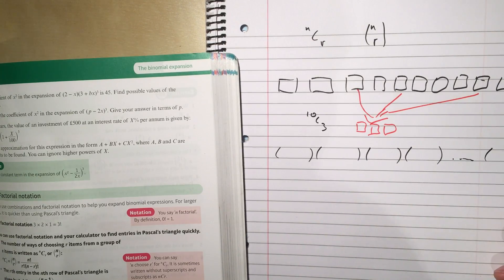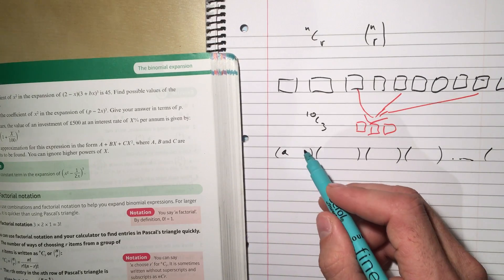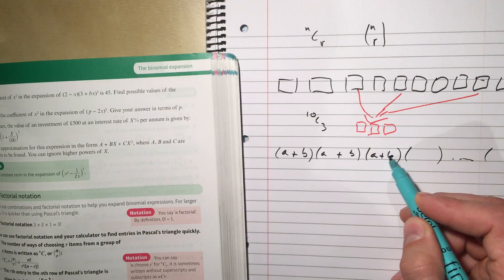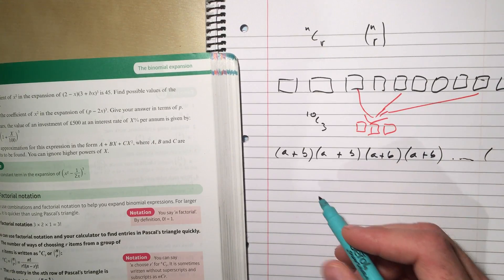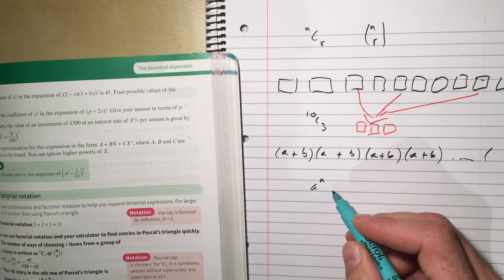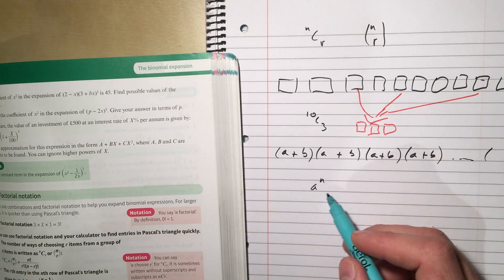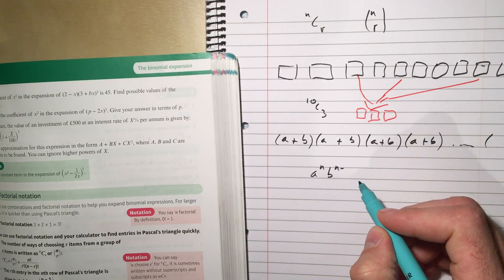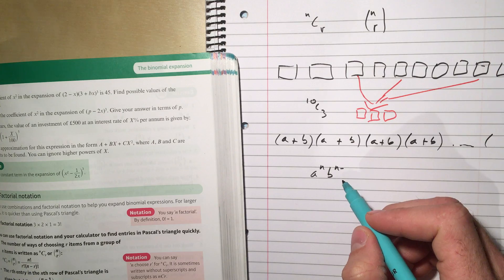But let's imagine we've got a load of brackets all times together, and they've each got an a and a b in them, a plus b, a plus b. So, you can perhaps see, let's say I want a to the power of n, the term which has got a to the power of n in it. Well, that is going to have b to the power of n minus...